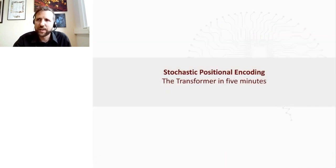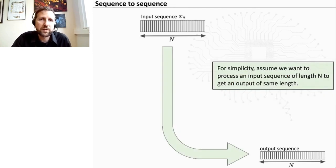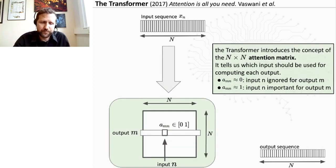To start with, I will shortly present the transformer models just in a few minutes for those that are not used to it. So let's assume for simplicity that we have a sequence of length N, and we want to produce some output of the same length. So the transformer, when it was proposed in 2017 in the Attention Is All You Need paper, introduces the concept of an attention matrix. So it's an N times N matrix, and for each output it gives the importance basically of each input to compute this output. So if an entry is close to zero, then it means that this input should basically be ignored to compute that output. And on the contrary, if that entry is much bigger than zero, then it means that this input is important to compute that output.